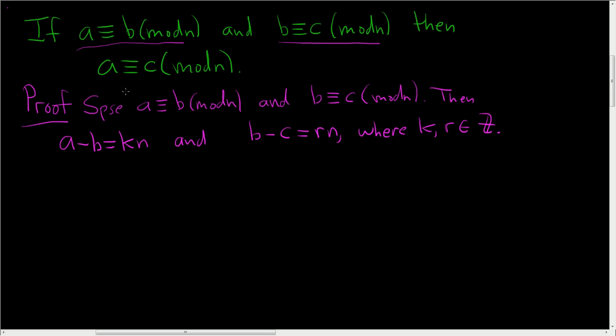So now we have to prove that A is congruent to C modulo N. So we have to show that A minus C is a multiple of N.